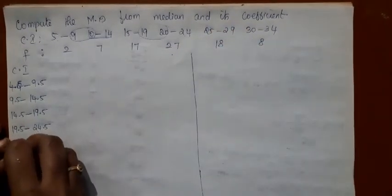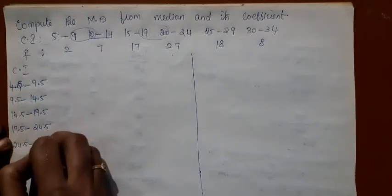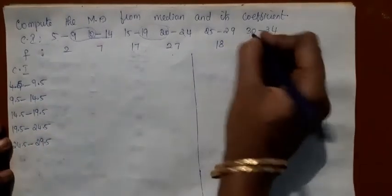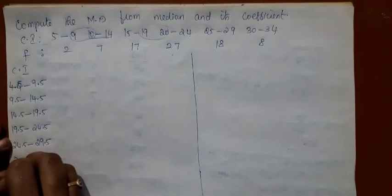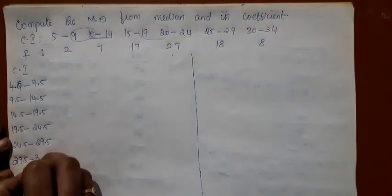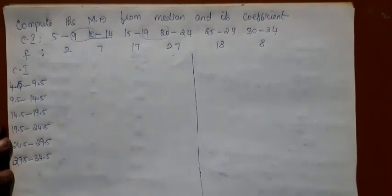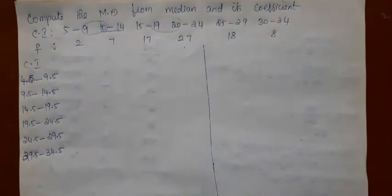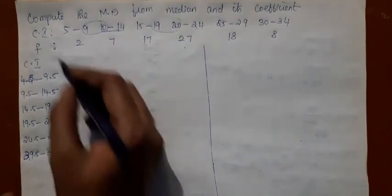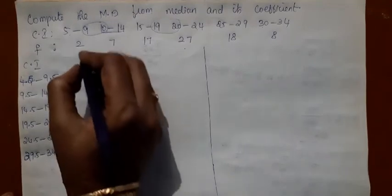Reduce 24.5. Add 29.5. Here you should reduce 29.5. When you add it to the upper limit, you get 34.5. So after doing this, your class intervals now have become exclusive intervals.